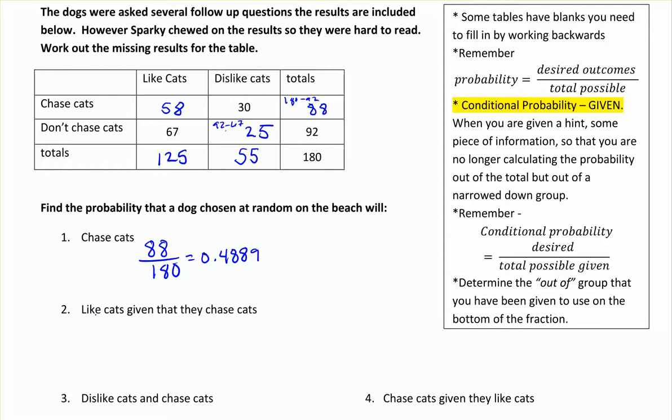The next thing we're going to look at is: what's the probability that they like cats given that they chase cats? So this is one of those 'given' problems — I'm going to highlight that word in yellow. This is the conditional probability, a given problem. What happens is that we're given a hint. So instead of asking what's the chance a dog likes cats out of all dogs, I'm giving you a hint to narrow it down even more.